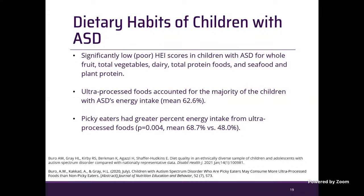In our secondary analysis of preliminary data, we found consistently low Healthy Eating Index scores associated with dietary quality — especially for whole foods, total vegetables, dairy, total protein intakes, and seafood and plant protein. Children with ASD consumed more ultra-processed food, which accounted for a mean of 63 percent of energy intake in our sample. Picky eaters, as reported by parents, had greater percent energy intake from ultra-processed food compared to non-picky eaters.